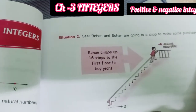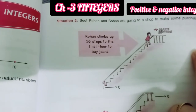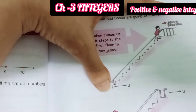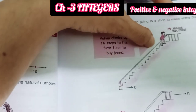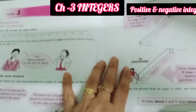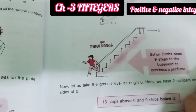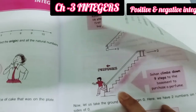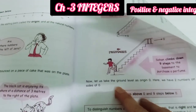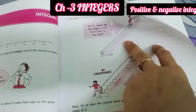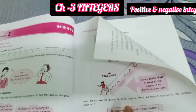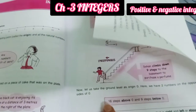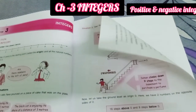In situation 2, Rohan and Sohan are going to a shop. Rohan climbs up 16 steps to the first floor to buy jeans — so the origin is 0 and Rohan is climbing up. Sohan climbs down 9 steps to the basement to purchase perfume. The ground level is the origin. Upstairs is to the right of the origin and downstairs is to the left. So 16 steps above 0 is positive and 9 steps below 0 is negative.